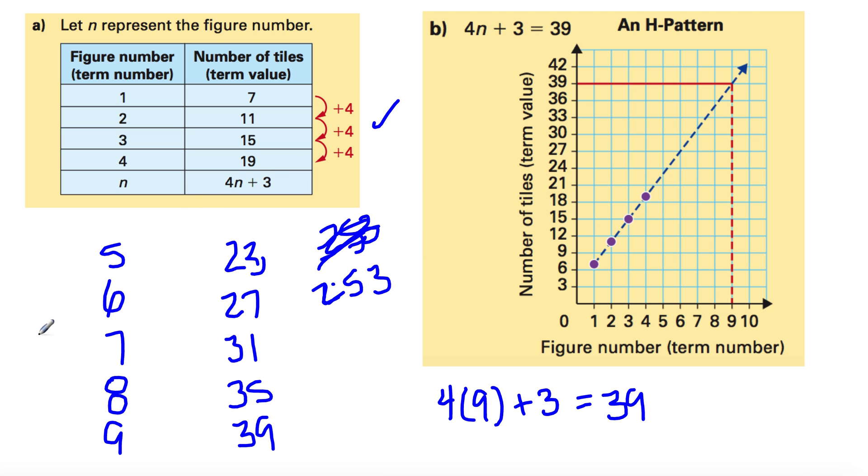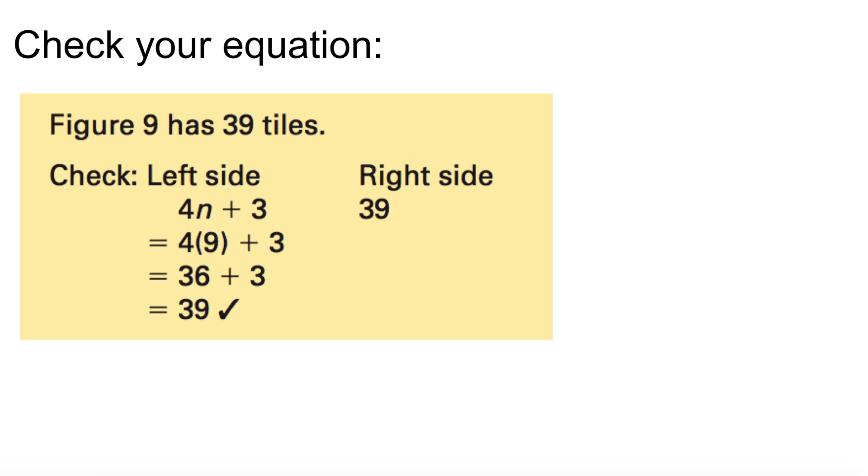All right. So, we will check our answer. So, four times nine, we determined, plus three. So, four times nine is thirty-six. Plus three will give you thirty-nine. These are equal to the right side. Left and right side are equal. So, are we right? Are we correct? Yes, we are. Definitely.